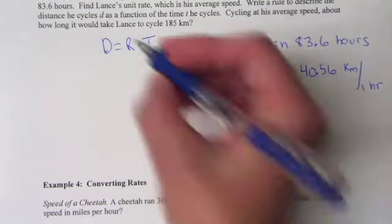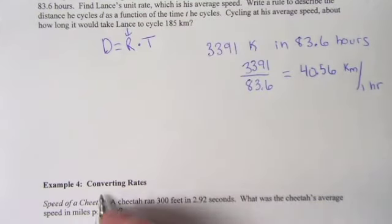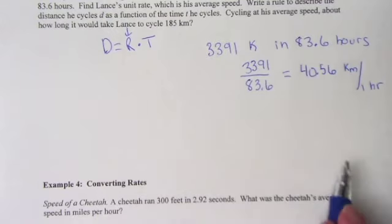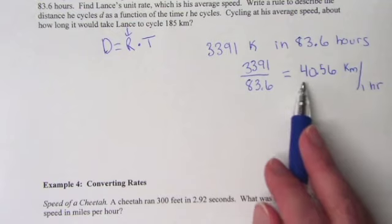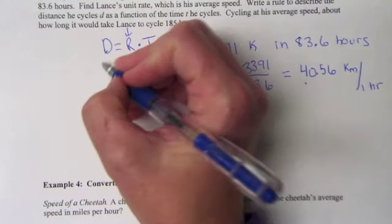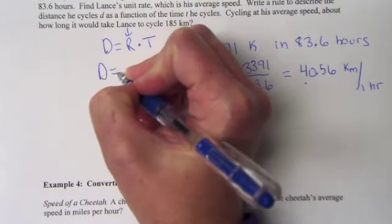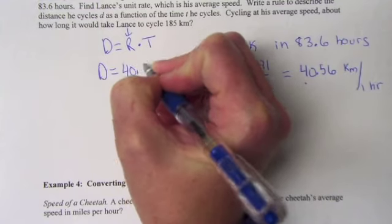So this R right here, it wanted the rate and it actually wants a unit rate. So rather than putting in this as our rate, we're going to put in a unit rate and we can just put in one number. So then what we do is distance equals 40.56 times time.